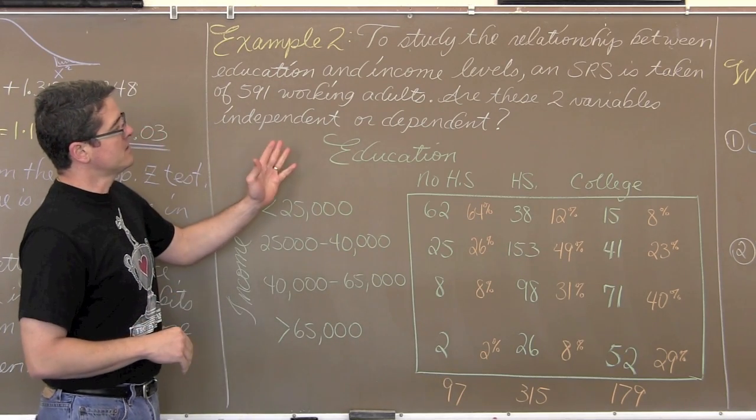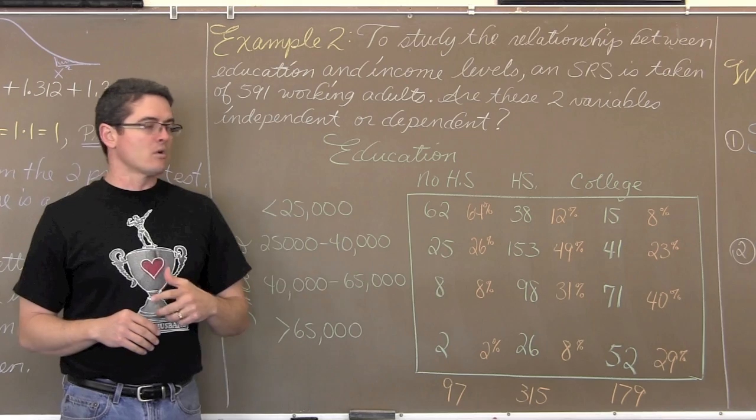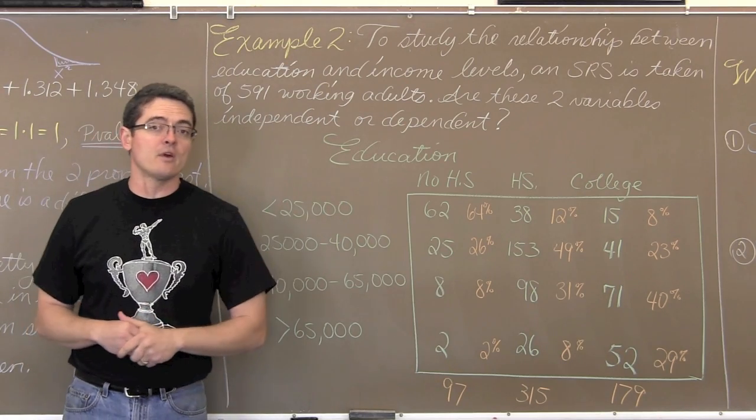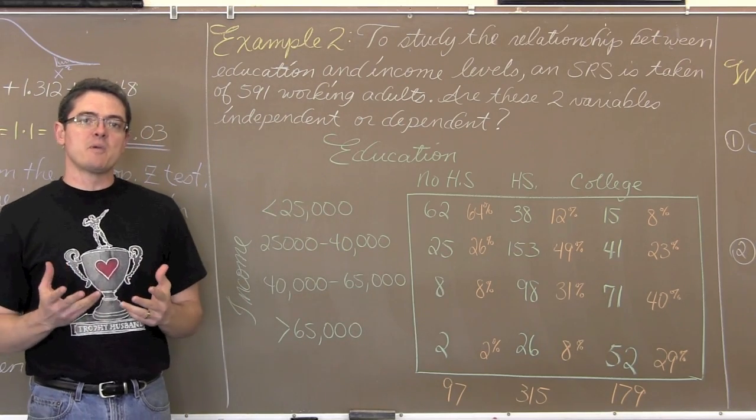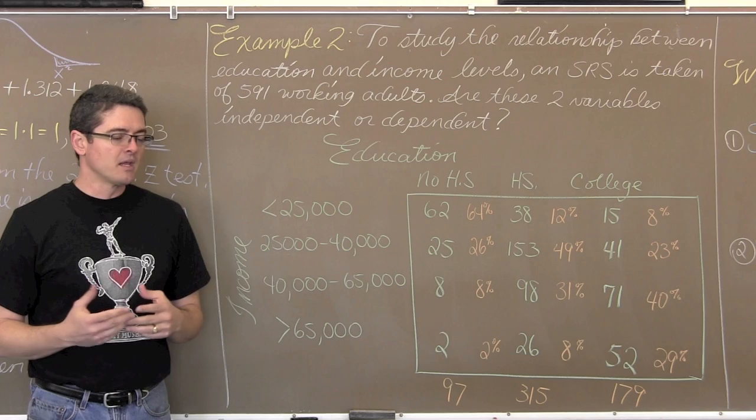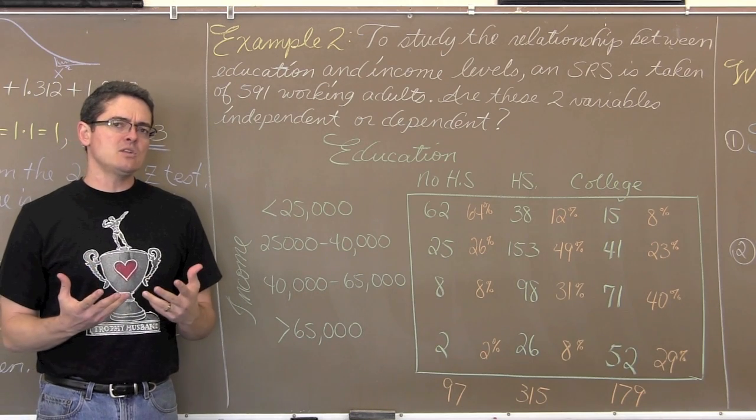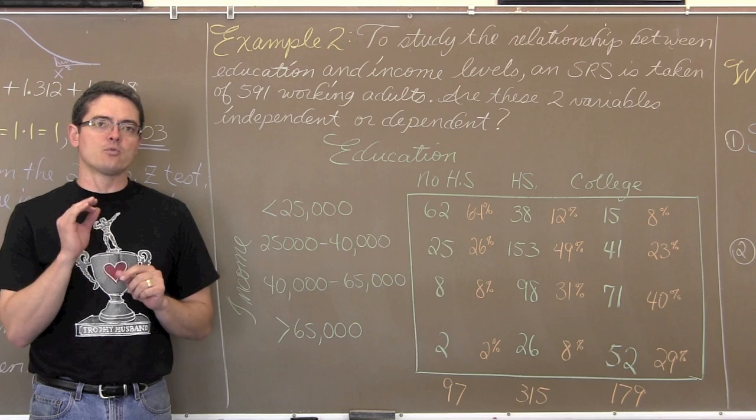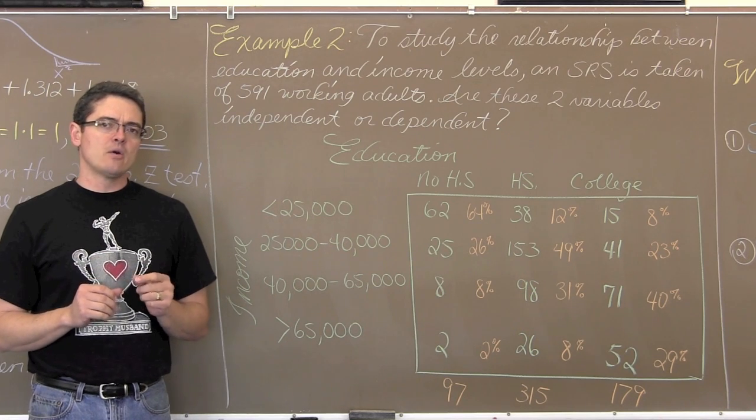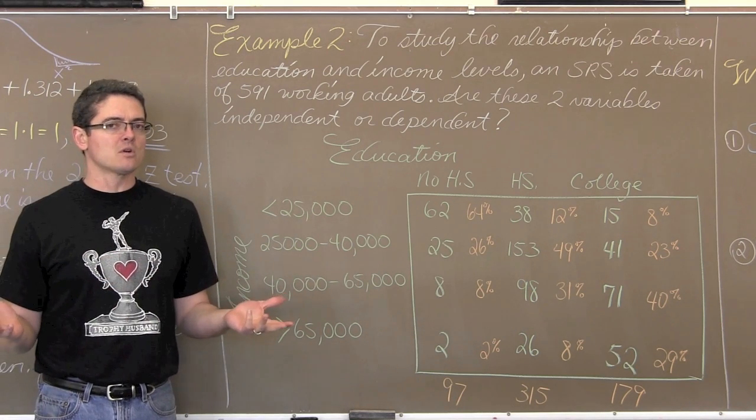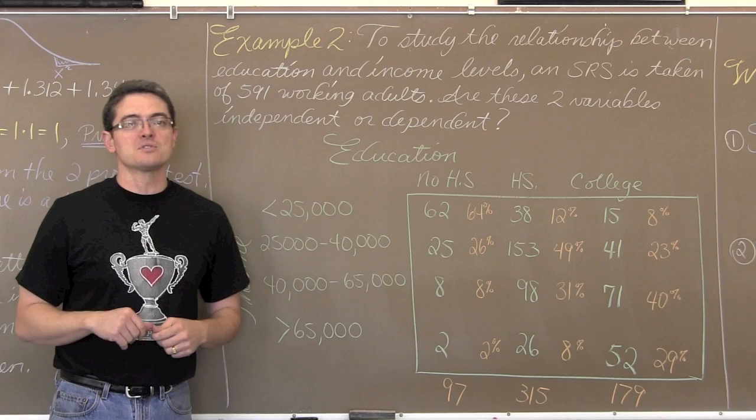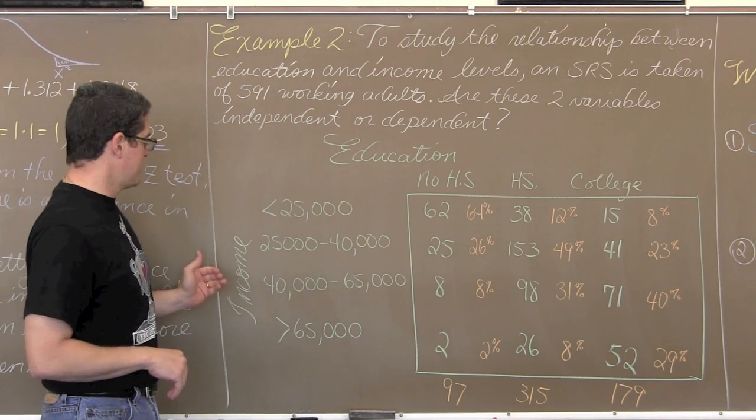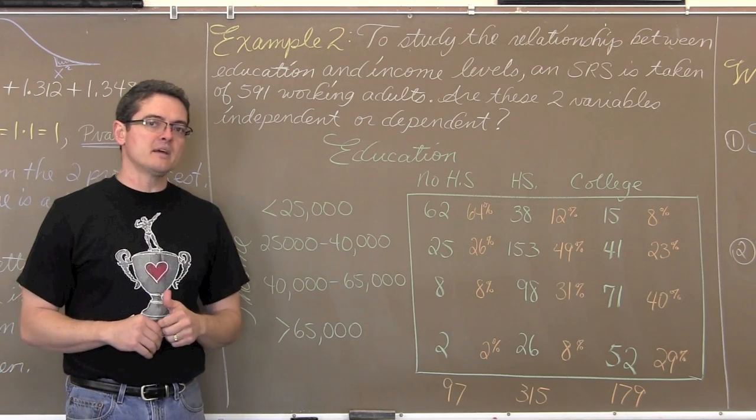So the fact that this is a single SRS and we are going to measure a couple of categorical variables within those respondents of that SRS, we are going to have a name change for the chi-square, the type of chi-square test it is, a little bit of rewording of H0 and Ha, but everything else pretty much works the same or actually identical to the first example. So is education independent to income?